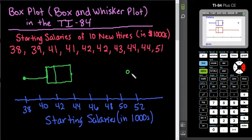But it just shows you that there is nobody in between 44,000 and 51,000. So the 51,000 is an outlier.